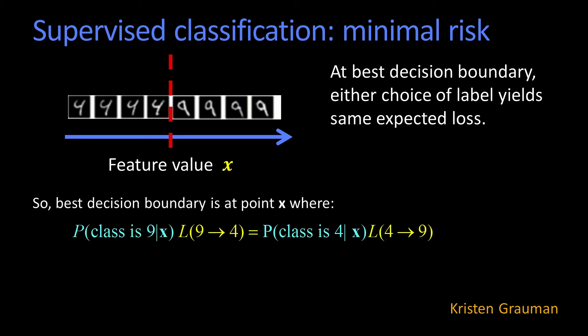So the best decision boundary is the x such that the probability that the class is really a nine times the cost of calling a nine a four, will be equal to the probability that it's really a four times the loss of calling a four a nine. When I set those two values equal, that's the x that I want for my decision boundary.